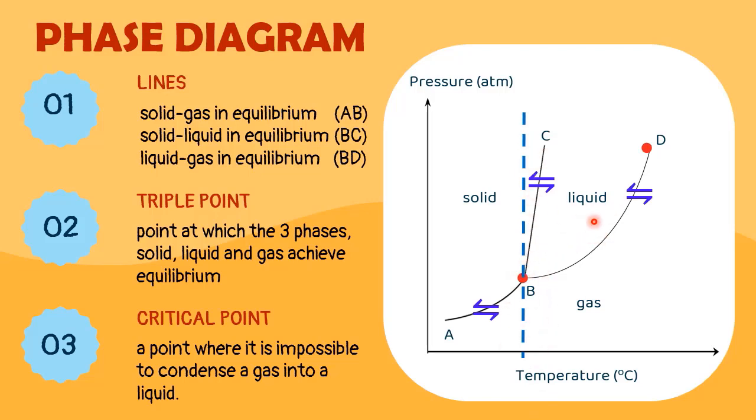If the slope slants to the right, it is called positive slope. If it slants to the left, it will indicate a negative slope. This positive or negative slope tells us about the density of solid when compared to liquid.